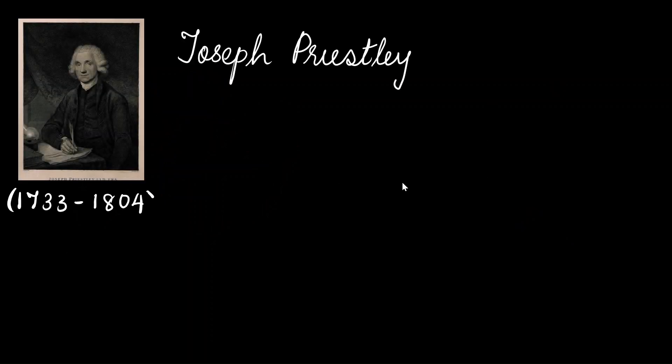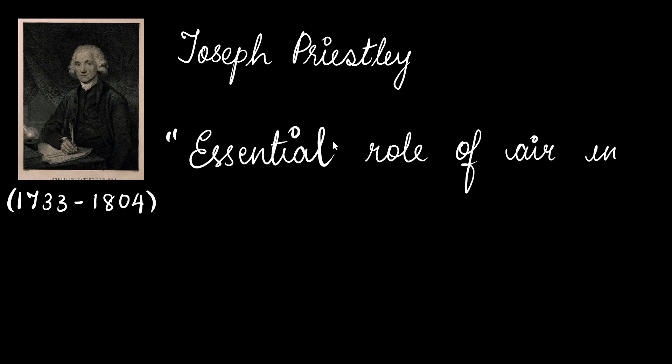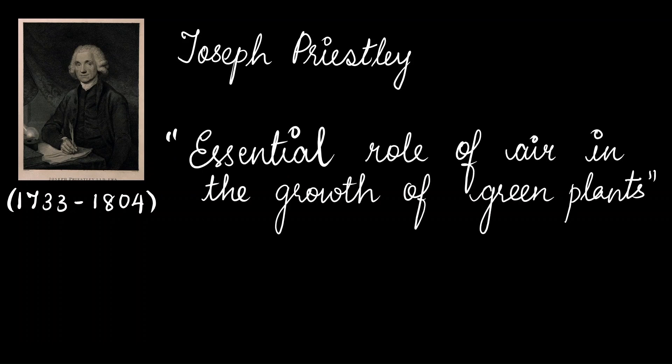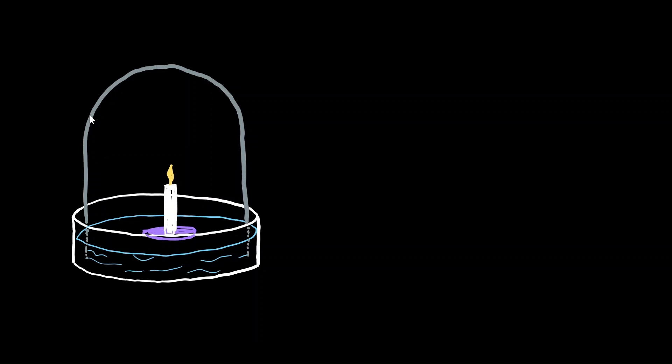The first scientist we are going to talk about is Joseph Priestley. He is the one who discovered the importance of air or gases in the process of photosynthesis. He found out the essential role of air in the growth of green plants. He used a specific experimental setup: he filled a glass tray with water, with a small island on it to hold different objects. He used a lit candle covered by a glass jar — also called the bell jar experiment.